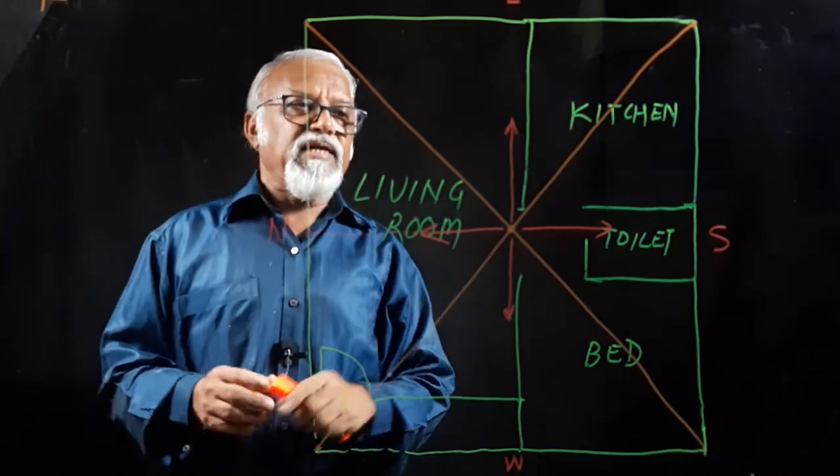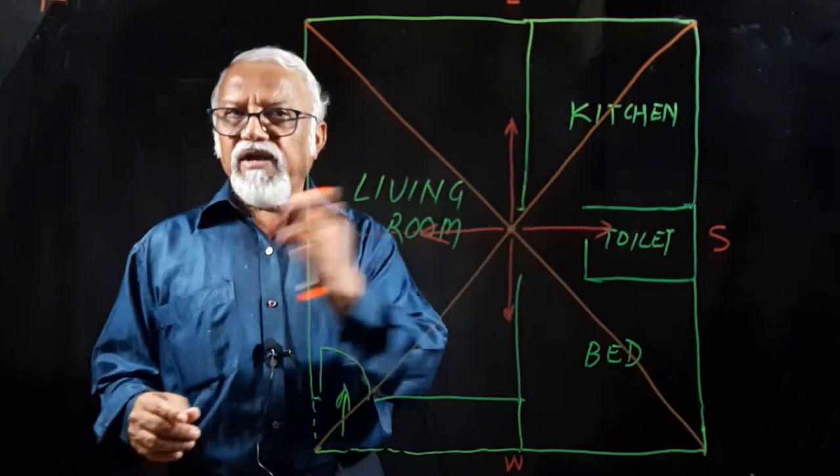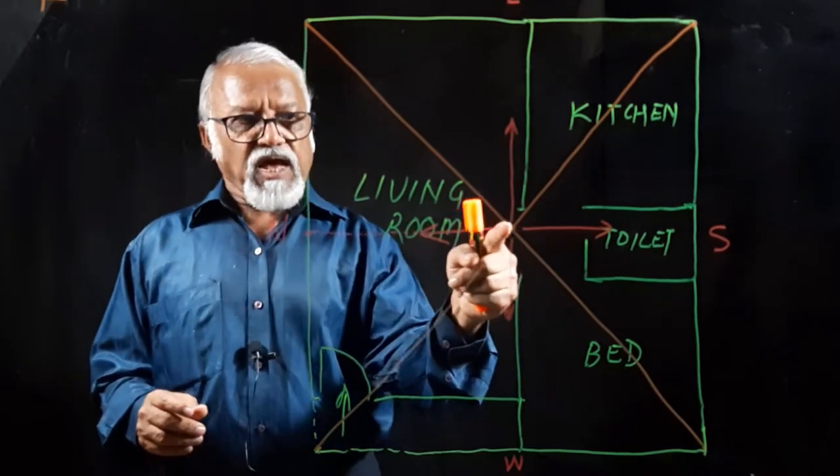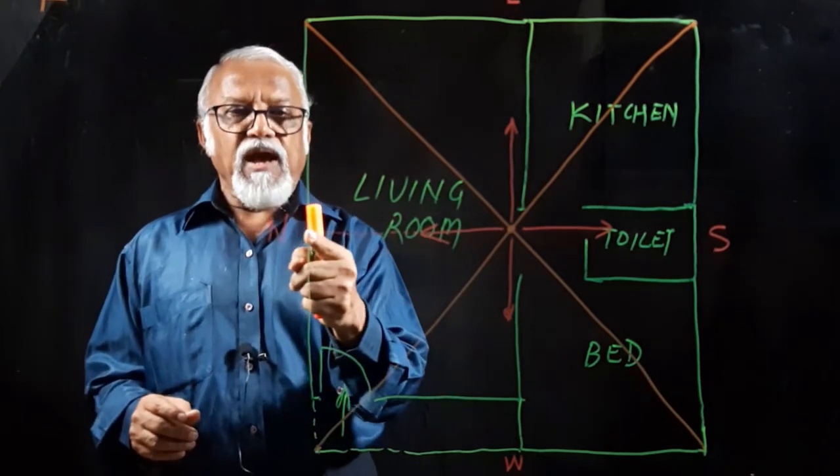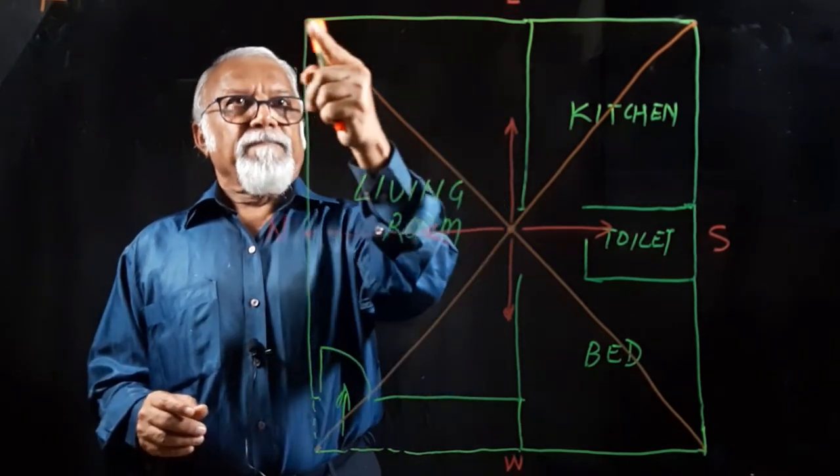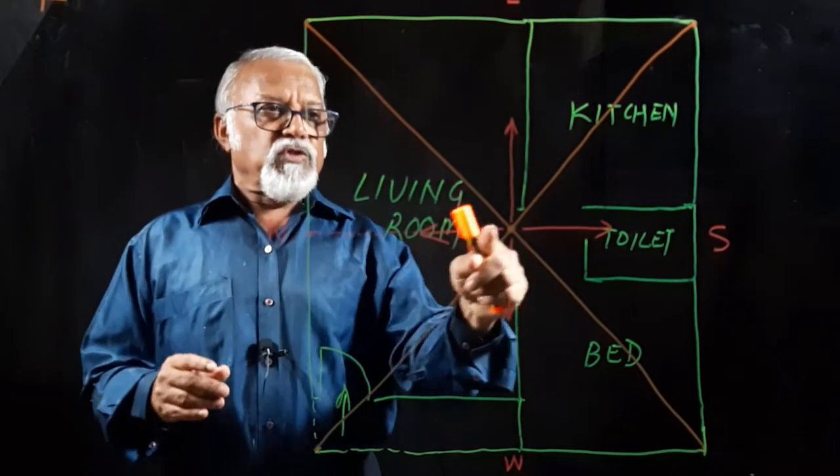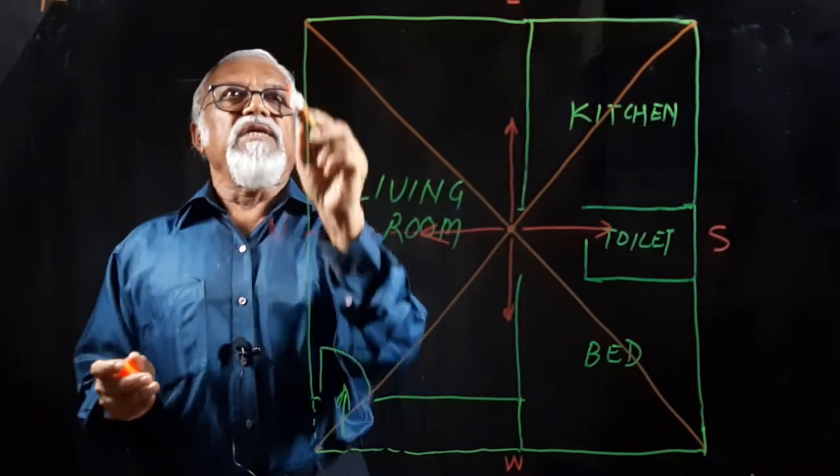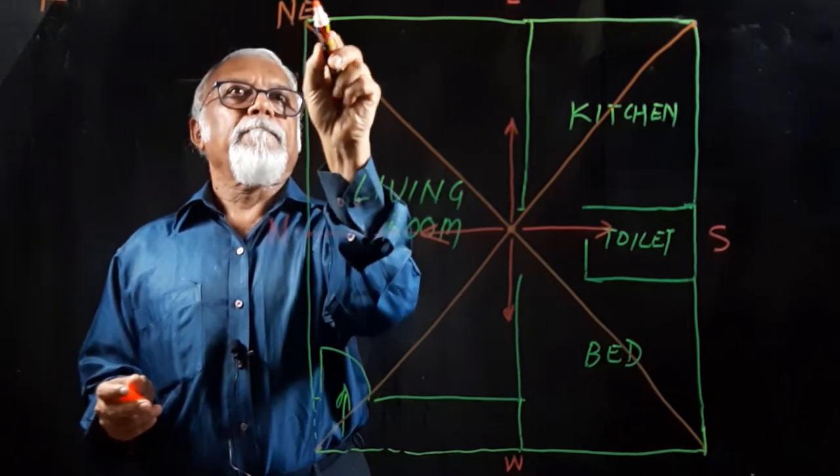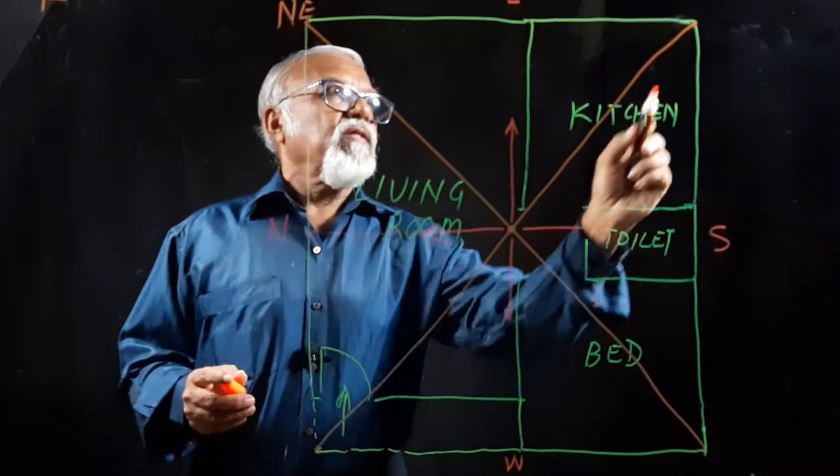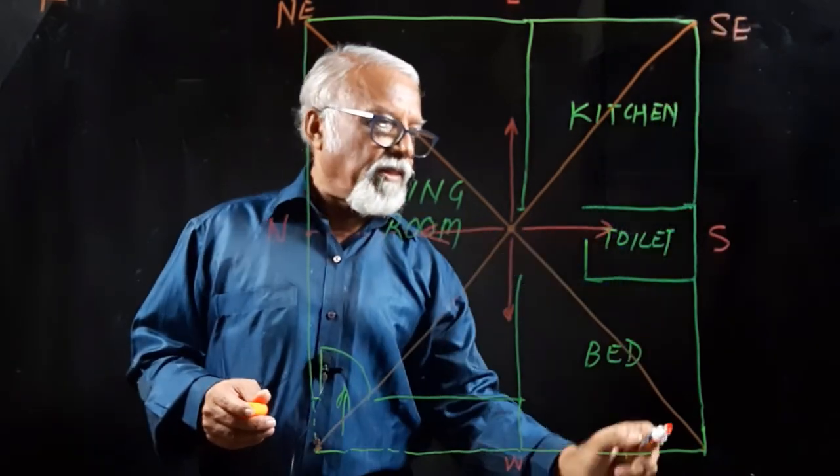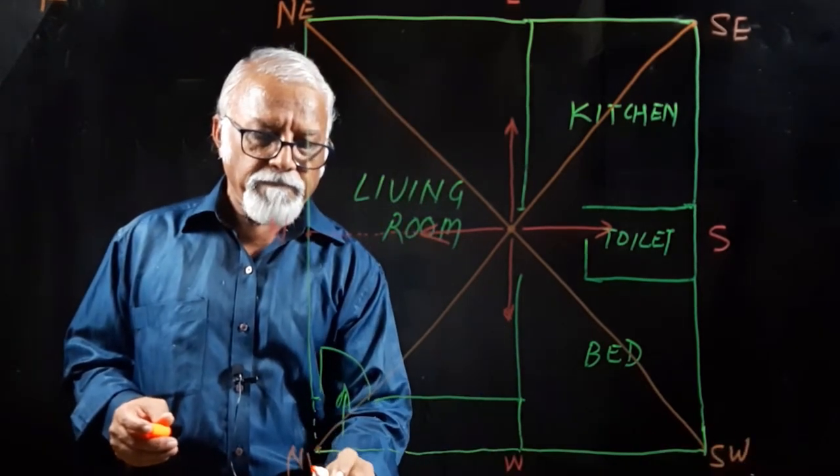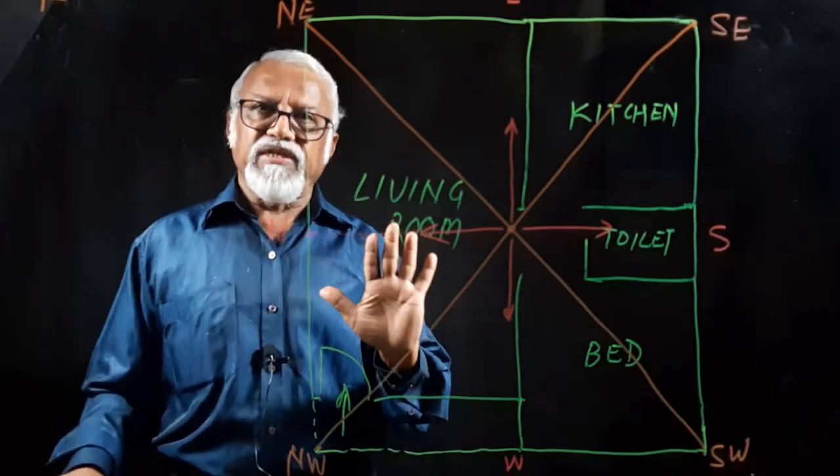Now, we go in for sub-cardinal directions. Sub-cardinal directions are nothing but the corners which are there. So this is the central point. And as our north line is parallel to one of the walls and the corner is crossing over here, if you take this as 45 degrees and this as 45 degrees, you will be finding that this corner which comes in is the northeast corner. Then this is the southeast corner, this is the southwest corner, and this is the northwest corner.